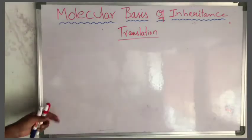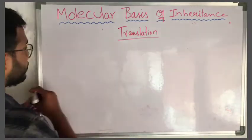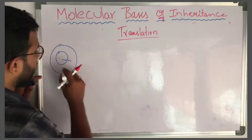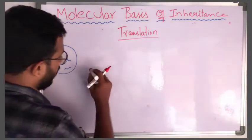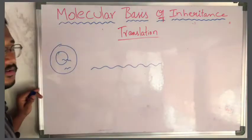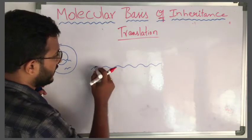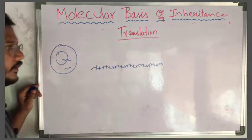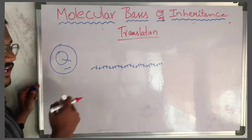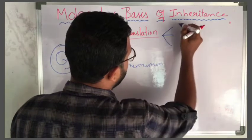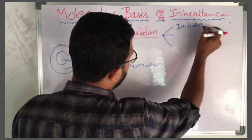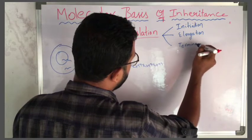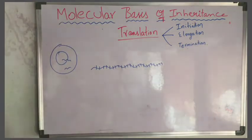Now listen very carefully as we discuss how mRNA released from the nucleus into the cytoplasm leads to protein production. The mRNA strand contains nitrogen bases. The translation process is divided into three steps: initiation, elongation, and termination.